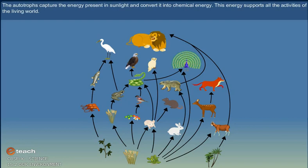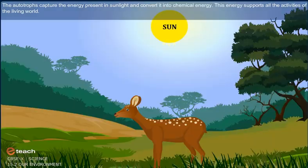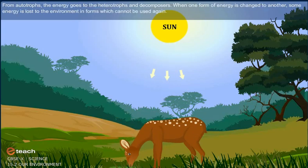The autotrophs capture the energy present in sunlight and convert it into chemical energy. This energy supports all the activities of the living world. From autotrophs, the energy goes to the heterotrophs and decomposers.